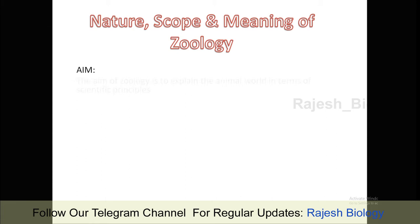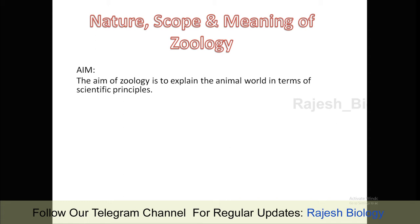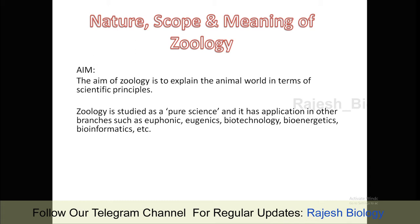The aim of Zoology is to explain the animal world in terms of scientific principles. The animal world is different from our reality. Zoology is studied as a pure science. There are different types of sciences — pure science is a pure breed, while mixed science is different. Zoology as a pure science has applications in other branches such as eugenics, biotechnology, bioengineering, bioenergetics, and bioinformatics. These are the mixture sciences, and this pure science helps in the remaining branches.